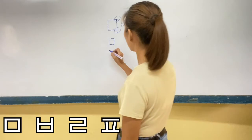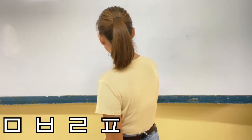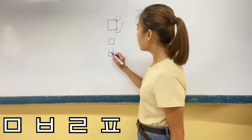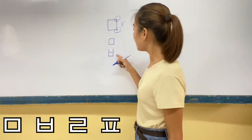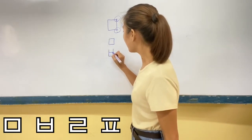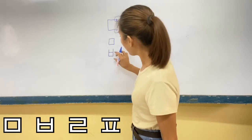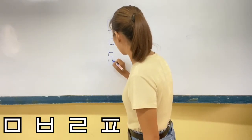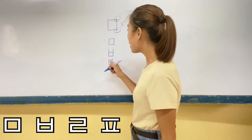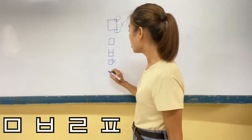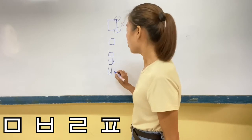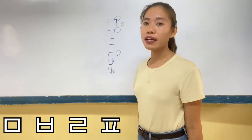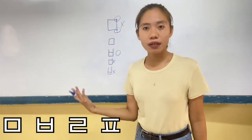For ㅂ, you have to make sure that when you write it, you write it this way — like a kind of square shape. The middle part should be in between the top and the bottom lines, so they can be balanced. This is wrong, and this is wrong. It should be like this.